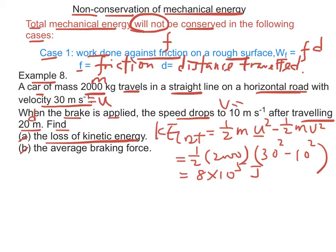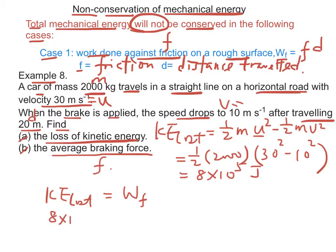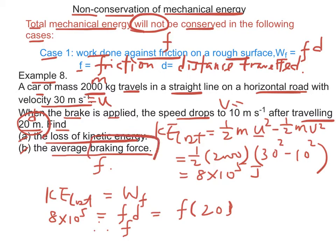Part B: the average braking force. Let the average braking force be F. We have KE loss equal to work done against friction. Therefore, 8 times 10 to the power 5 joules equals Fd equals F times 20 m. Therefore, the frictional force or the braking force is equal to 4 times 10 to the power 4 N.